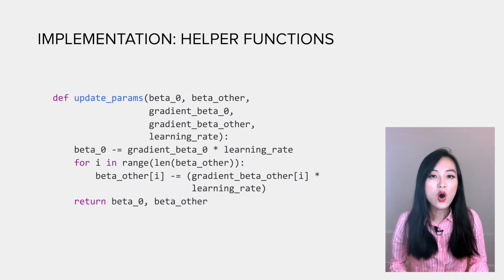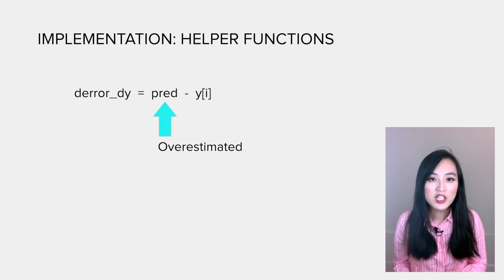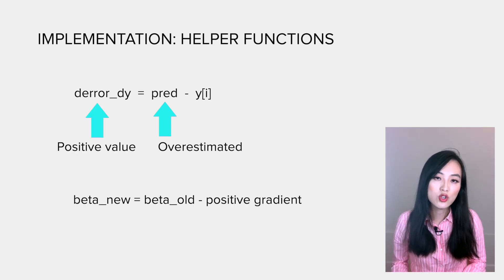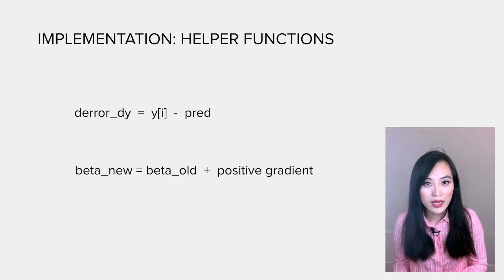It depends on how we calculate the loss. In the function, we subtract the observation from the prediction. If the prediction is overestimated, the gradient is a positive value and we will need to subtract the gradient from betas. If we do it the other way, i.e., subtracting pi from yi, we'd need to add the gradient to betas.